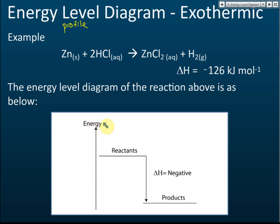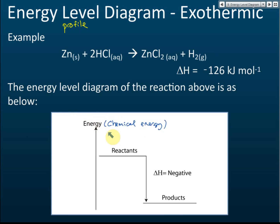This energy level diagram shows the energy change — whether the energy will decrease or increase. The energy shown here is the chemical energy, so it shows the chemical energy change.